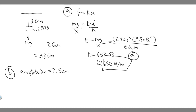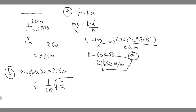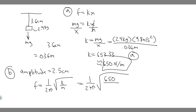Now we want to find the frequency of oscillation. The formula for frequency is f = (1 / 2π) × √(k/m). We just solved for k, and m is the mass which we already know. So plugging in: 1 over 2π, multiplied by the square root of 650 — using the rounded value — divided by the mass, 2.4 kilograms.